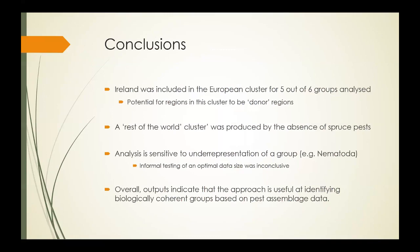Some of the conclusions: For five out of the six groups that were interpreted, Ireland was included within the European cluster, indicating the potential for regions within this cluster to be donor regions of pests to Ireland. Essentially, what this means is that our highest risk pests are most likely to come from our European neighbors than anywhere else, according to this approach. The rest of the world cluster was produced by the absence of spruce pests. The presence-absence data for these absent clusters predominantly display zeros, highlighting that there are very few pests of Picea found in these regions. This makes sense considering the distribution of spruce globally.